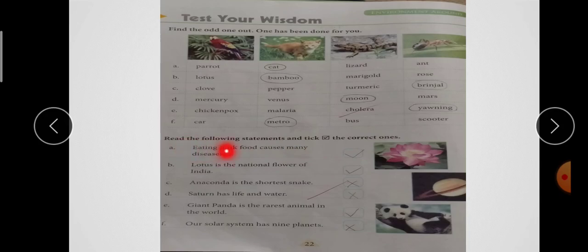ये है - Eating Junk Food Causes Many Diseases. कि अगर हम junk food खाते हैं, तो उसे बहुत सारी बीमारियां होती हैं. तो क्या है ये? Correct. Second है - Lotus is the National Flower of India. तो ये भी क्या है? Tick.